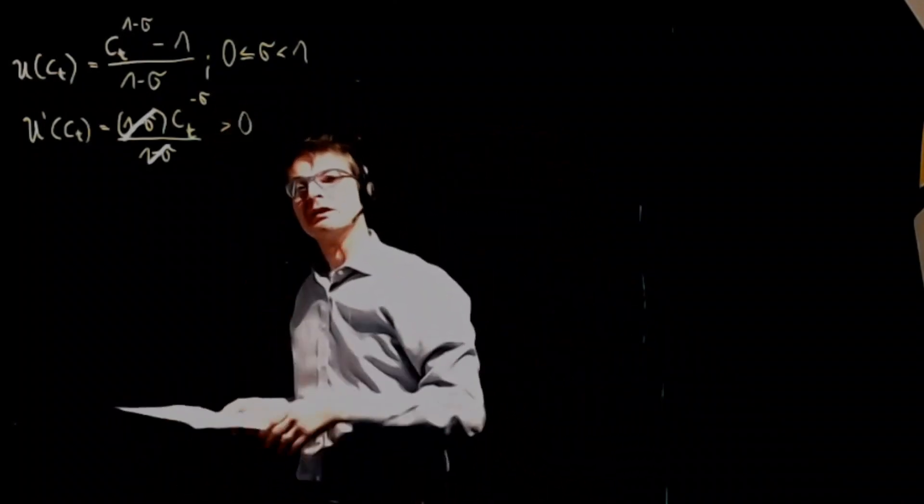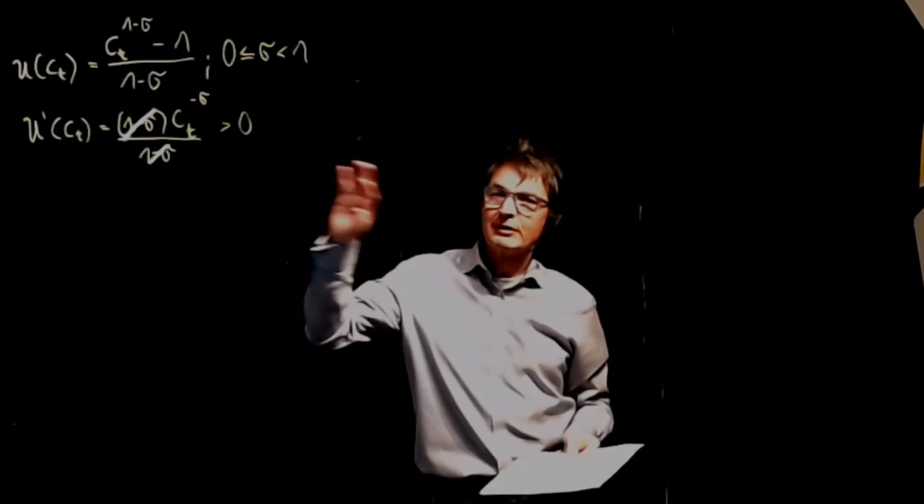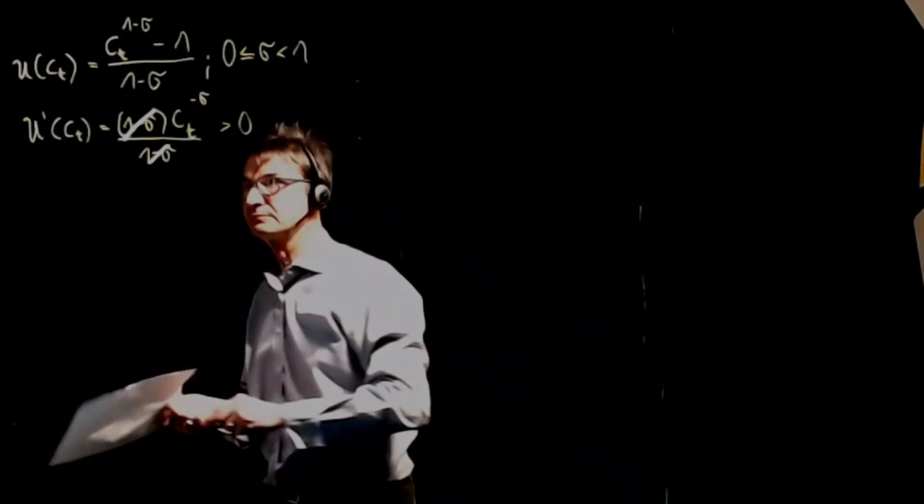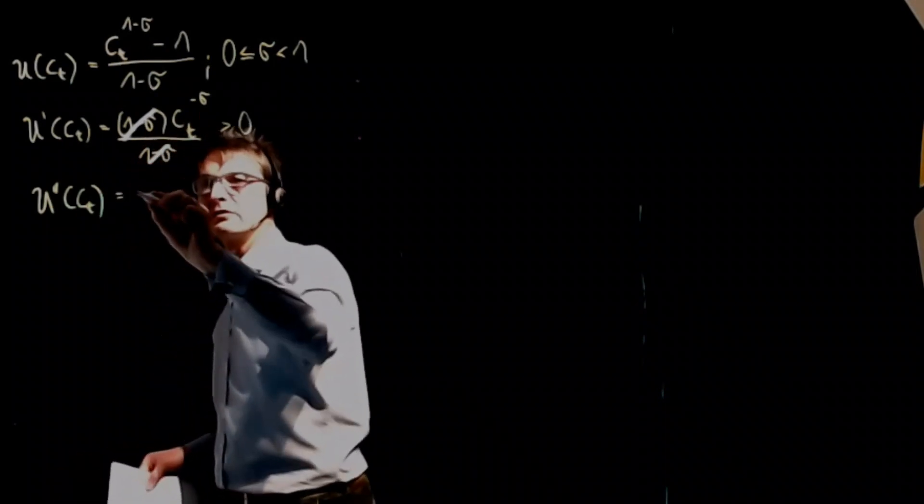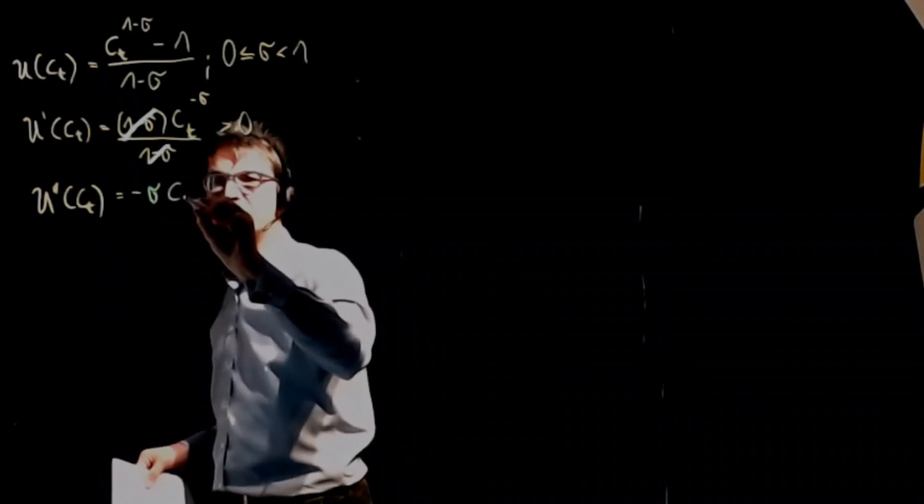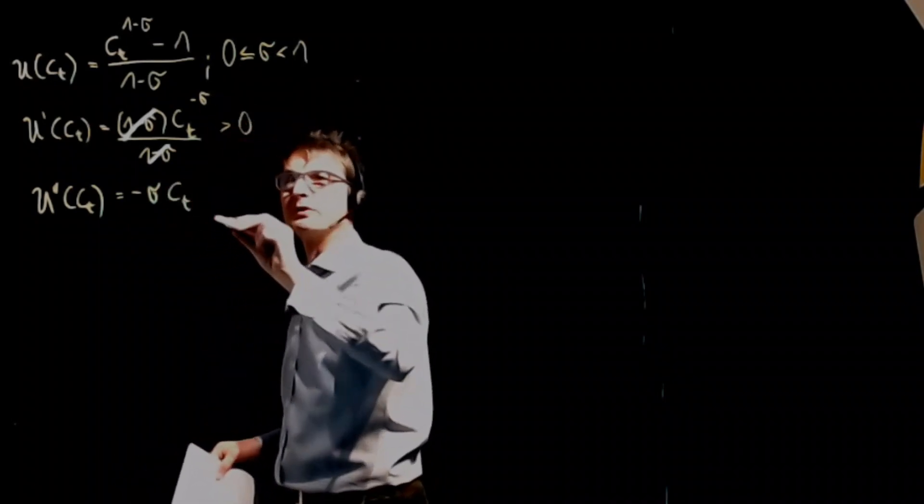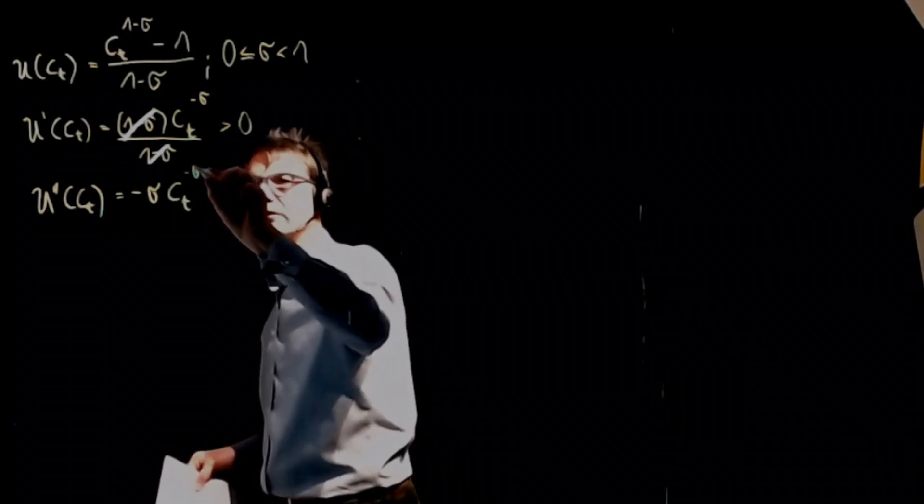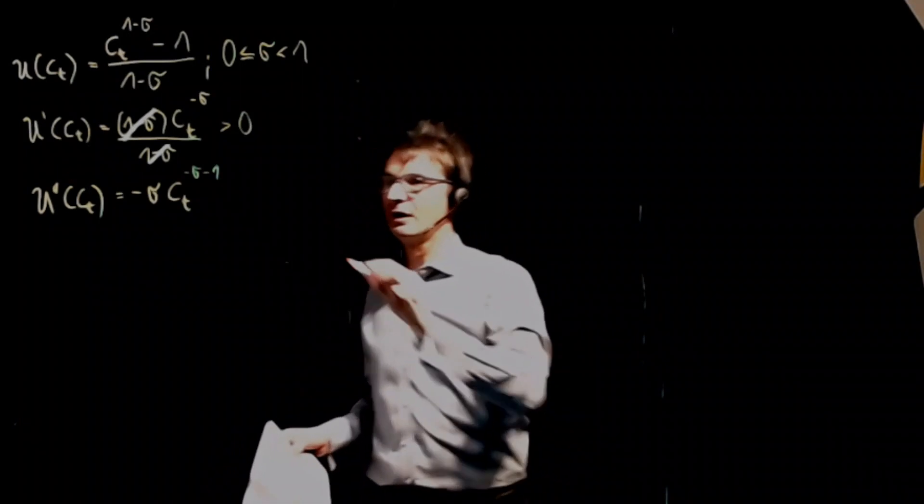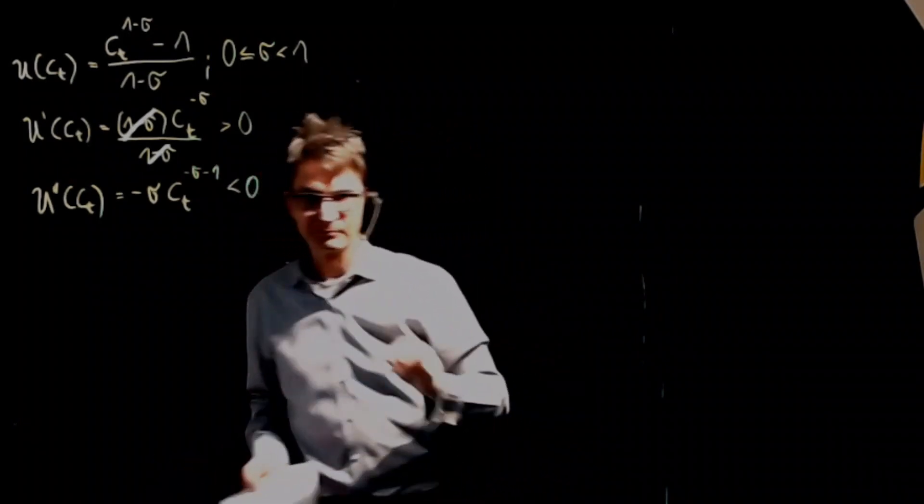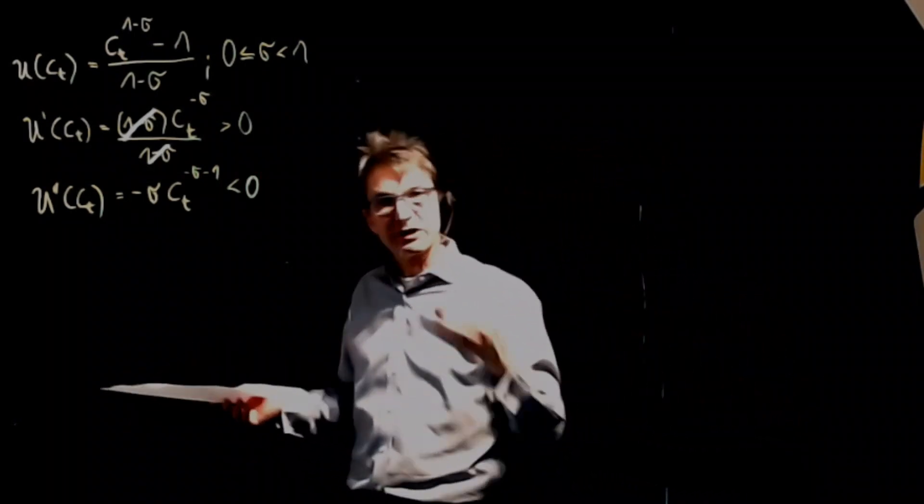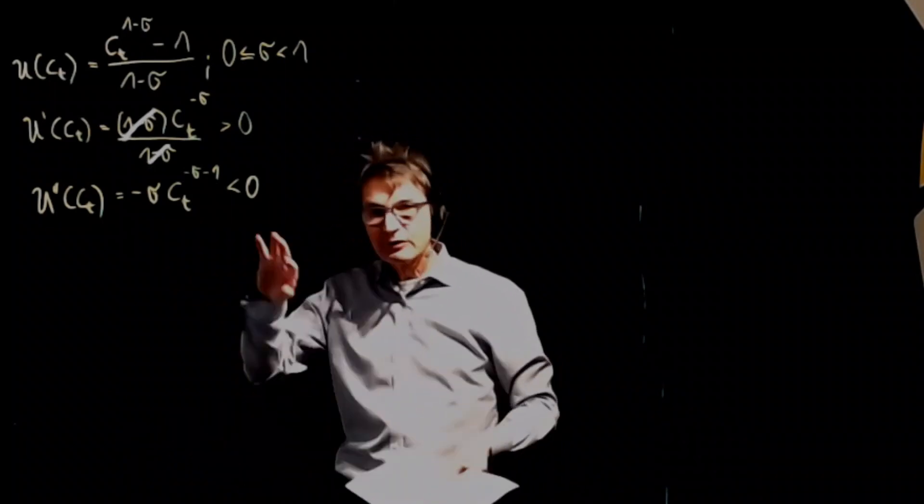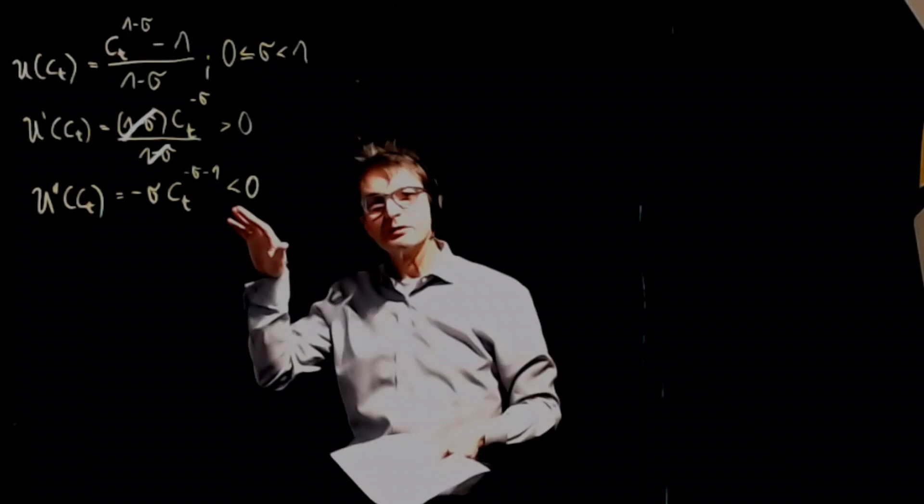Whatever level you have here, it tells you that the slope is decreasing. In order to show this to you, we take the second derivative of CT, and this is then equal to minus sigma times CT to the power of minus sigma minus 1. And now you see this is smaller than 0. So we are going to have the utility function quite similar to the CARA utility function, upward sloping but with decreasing marginal utility.